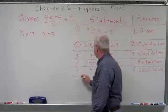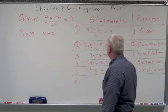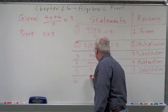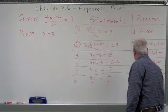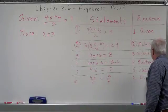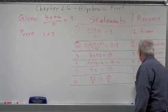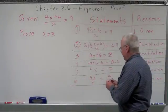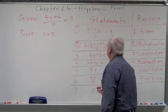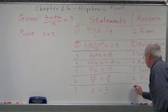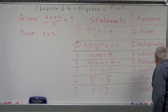You always knew solving equations was a lot of work, just didn't know how much work you were doing! Statement six — looks like we need to do some division: 4x divided by 4 equals 12 divided by 4. The reason is the Division Property. Statement seven: x equals 3. Reason: Substitution.